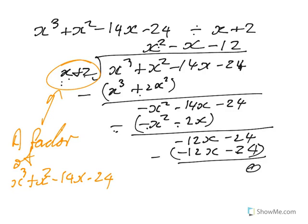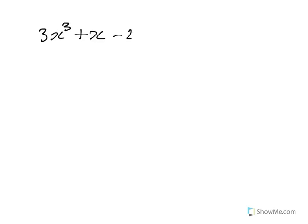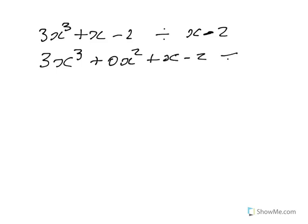Next, let's look at 3x cubed plus x minus 2 divided by x minus 2. You'll notice this one doesn't have an x squared term. So, to keep track of everything, we write it as 3x cubed plus 0x squared plus x minus 2 divided by x minus 2.